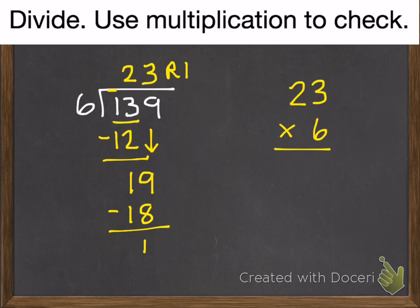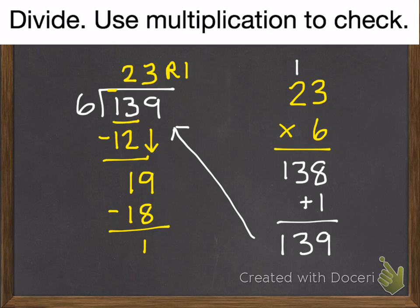This leaves us with 1 remainder. We check it. 23 times 6. 6 times 3 is 18. 6 times 2 is 12. Plus 1 is 13. Add in our 1 remainder. And we have 139. Which is what we wanted. So 23, remainder 1 is our quotient.